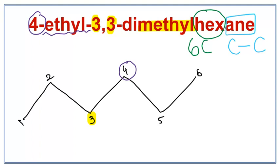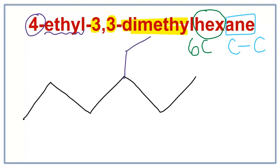Let's get rid of these numbers and attach the ethyl and the dimethyls. On the 4th carbon, we have ethyl. And on the 3rd carbon, we have dimethyl. So we have a methyl here and a methyl here.